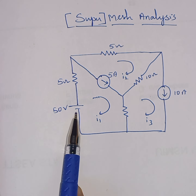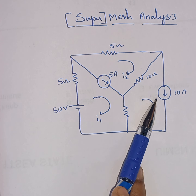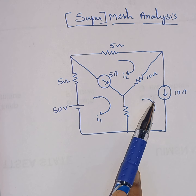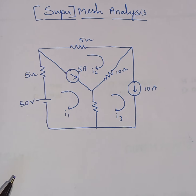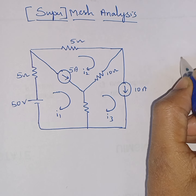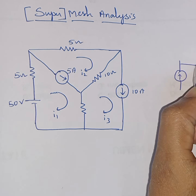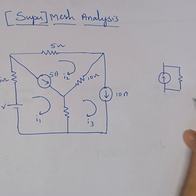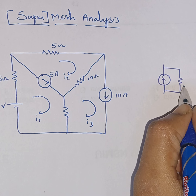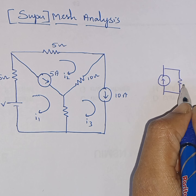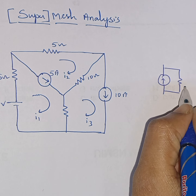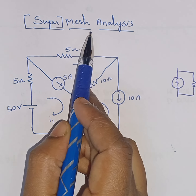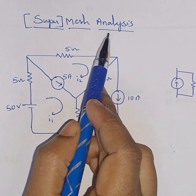In this problem, we have 2 current sources. A practical current source has a current source in parallel with a resistor, and we cannot convert that into a voltage source. So this problem cannot be solved by normal mesh analysis — it requires super mesh analysis.